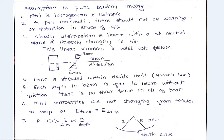And the second assumption is, according to Bernoulli, there should be no warping or distortion in the shape of cross-section of the beam. Third is, strain distribution is linear with zero at neutral plane, linearly changing in the cross-section. This linear variation, strain distribution linear variation is valid up to failure.